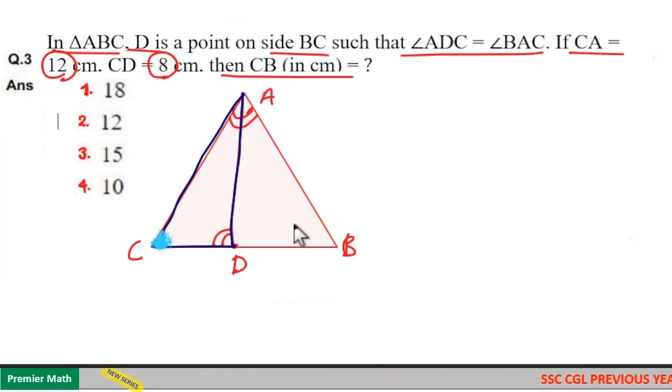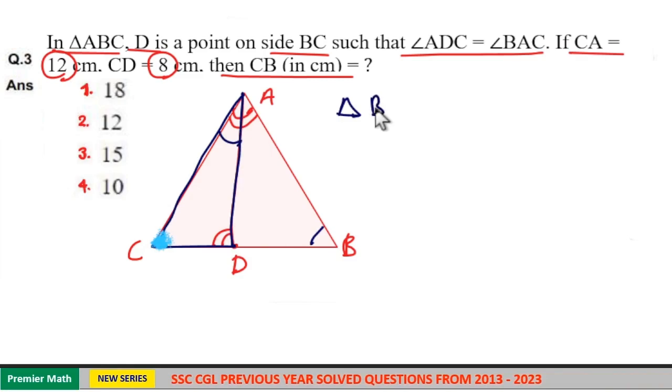Two angles are equal means the remaining third angle is also equal. The remaining angle in the larger triangle is angle B and in the smaller triangle is angle DAC. Three angles equal means these triangles are similar. Triangle ABC is similar to triangle DAC.